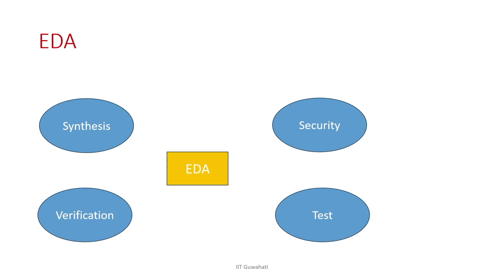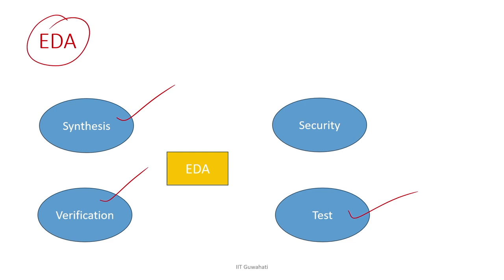In a nutshell, EDA has four arms: the primary one is synthesis, where you convert your design from high level to low level automatically. You have verification, which ensures the synthesis process is correct. You have test, which checks whether the manufactured IC has no manufacturing faults. And you have security, which ensures there is no IP piracy, reverse engineering, or other threats. These four are independently different research areas with a lot of ongoing research.